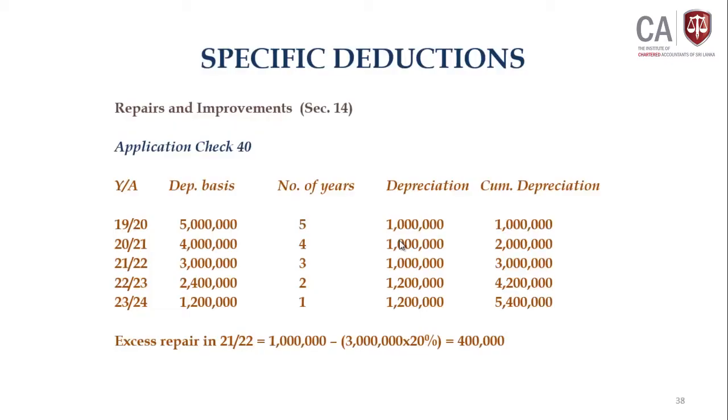This example clearly shows how capital allowance is claimed on the cost of the asset over the period of time under the new act — unlike the previous act where capital allowance was claimed on cost at a given percentage rate. Under the new act, capital allowance is claimed on the depreciation basis, which can vary, and is based on the number of years remaining.